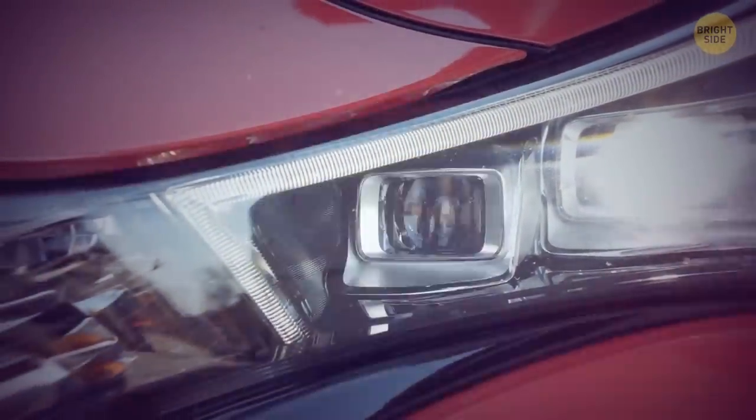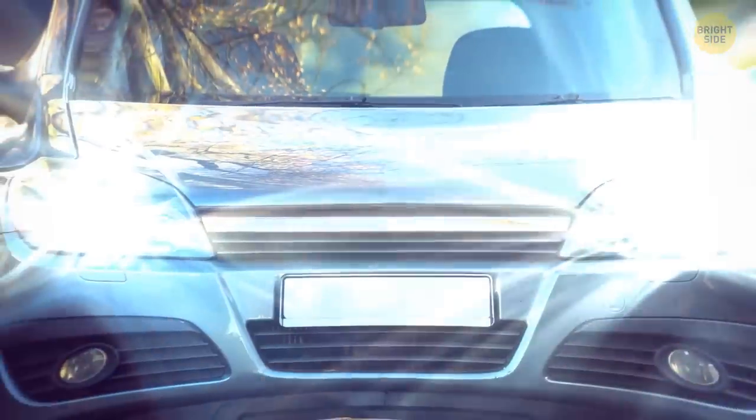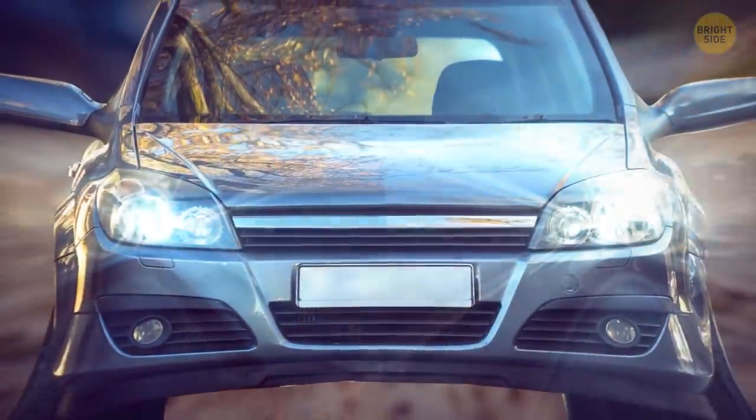Plastic headlights have a protective layer of polycarbonate covering them. But it disappears after a few years due to UV rays from the sun, rain, and road grit. Once this protective layer is removed, the headlight is vulnerable to oxidation.